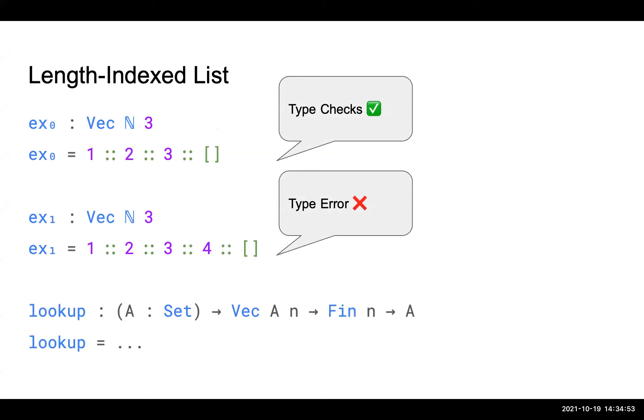Another use is you can write a total safe lookup function that takes a Vec of length n and an index less than n, and always return an element of type A. So unlike a conventional programming language here, we don't need to use the maybe or optional or even return runtime exception here. So dependent types are great.